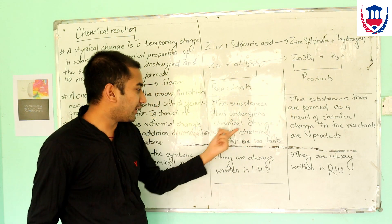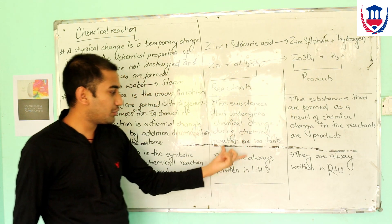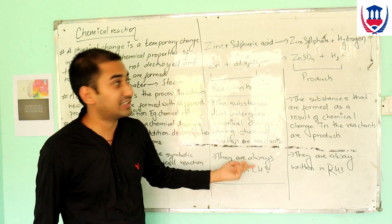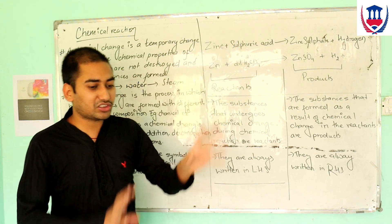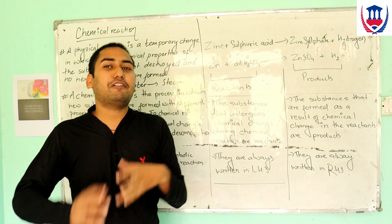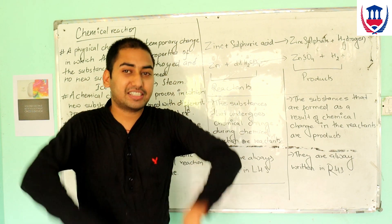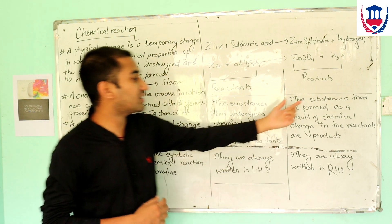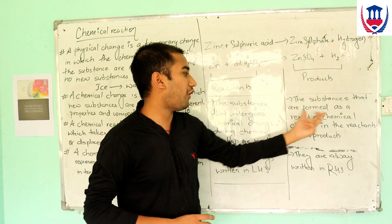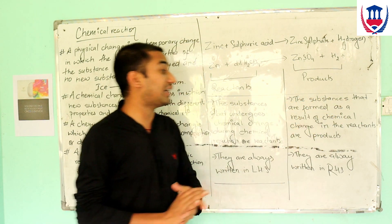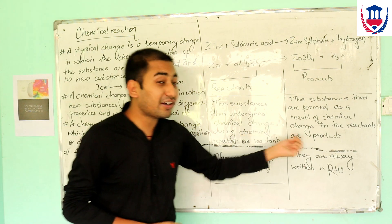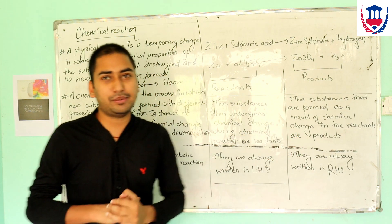The substances that undergo chemical change during a chemical reaction are called reactants. And the substances that are formed as a result of chemical change in the reaction are called products.